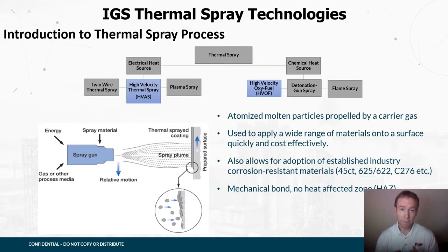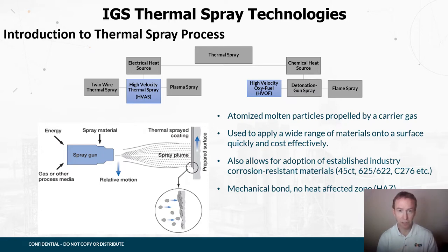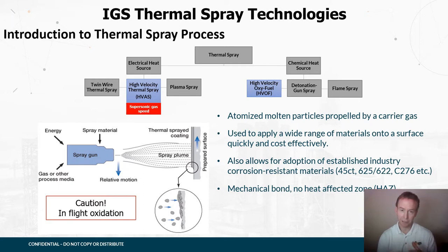When we talk about thermal spray, there are a number of different techniques and classes of technology available in the marketplace. IGS uses high velocity thermal spray processes. On the family tree of thermal spray, on the left-hand side with an electrical heat source, we use an arc and two wires to melt the feedstock — a high velocity arc spray process. On the right-hand side with high velocity oxy-fuel, we use a flame and a powder feedstock to atomize the metal, which is then projected onto the surface using a carrier gas. What's critical is that we have a supersonic gas speed, either created by the design of the gun or by the velocity of the flame in the oxy-fuel process.